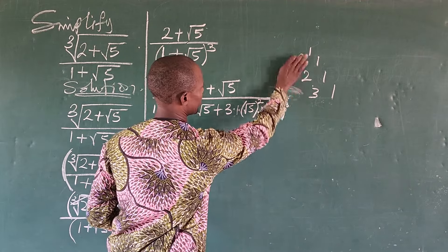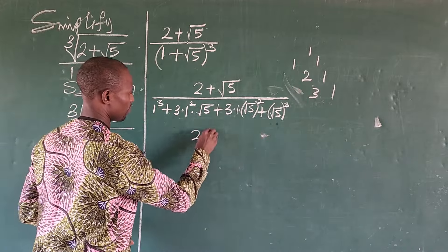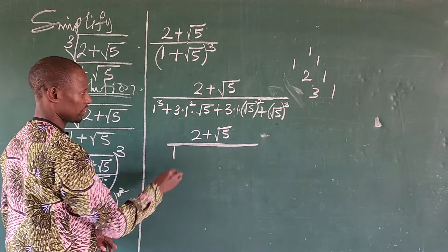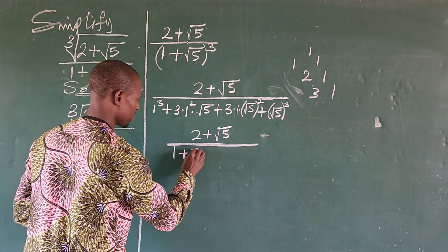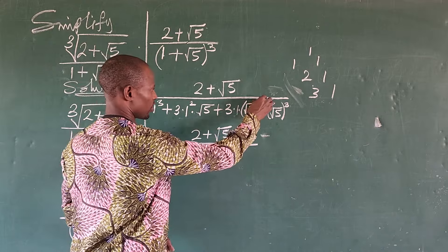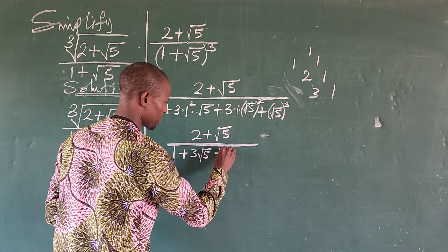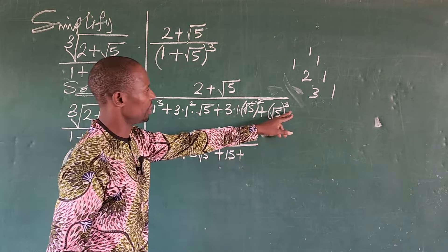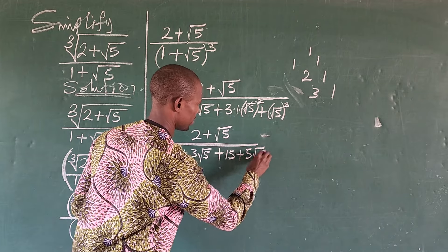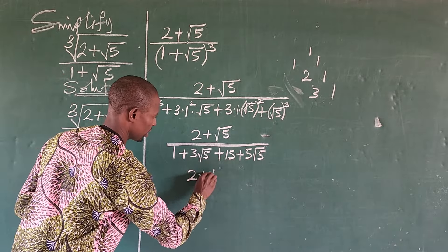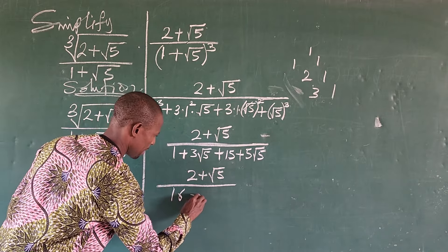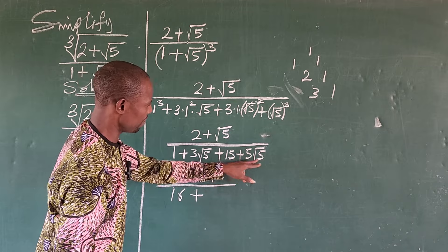So we now have 2 plus the square root of 5, all over. The denominator simplifies: 1 plus 3 root 5, then 3 times 5 gives us 15, plus 5 root 5. So we can add 1 and 15 together to give us 16, then 3 root 5 plus 5 root 5 gives us 8 root 5.